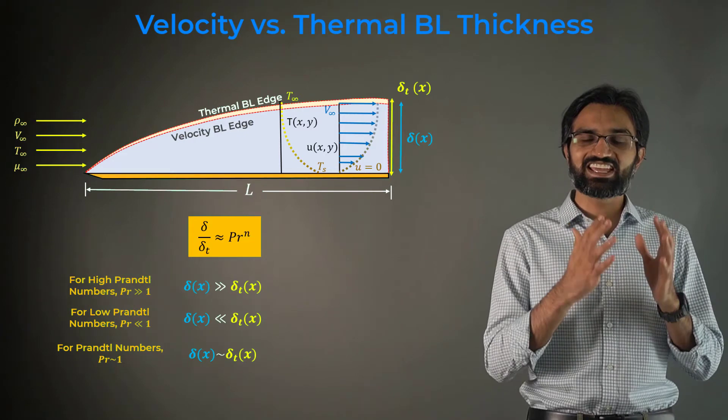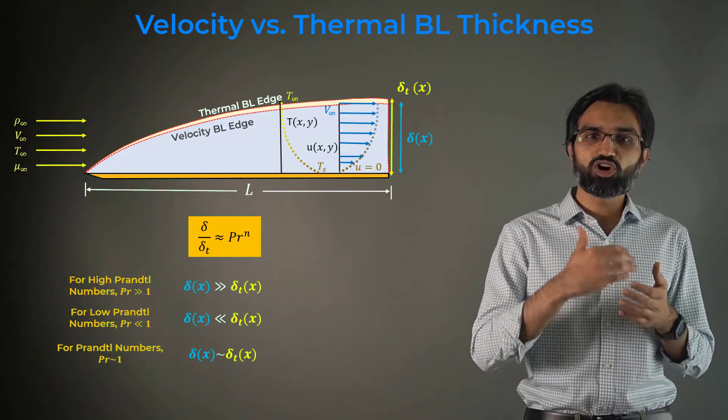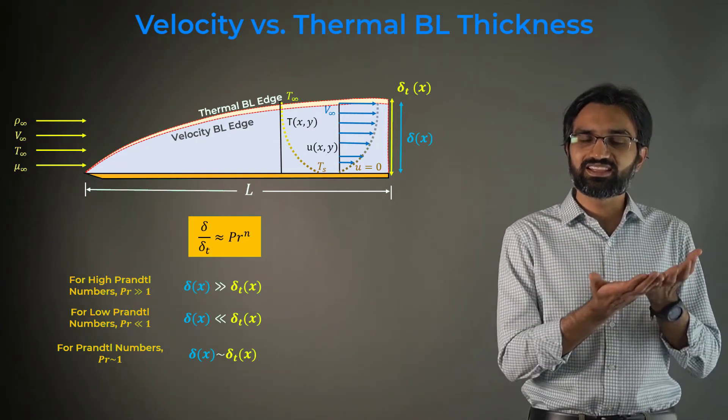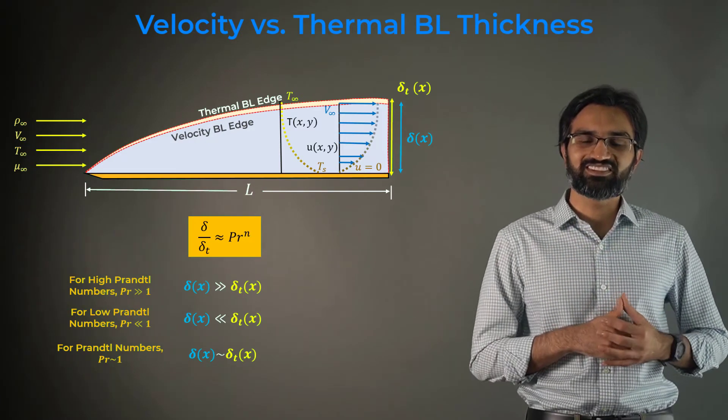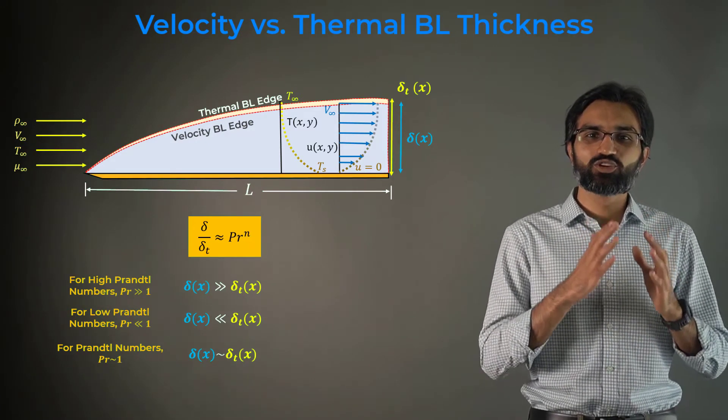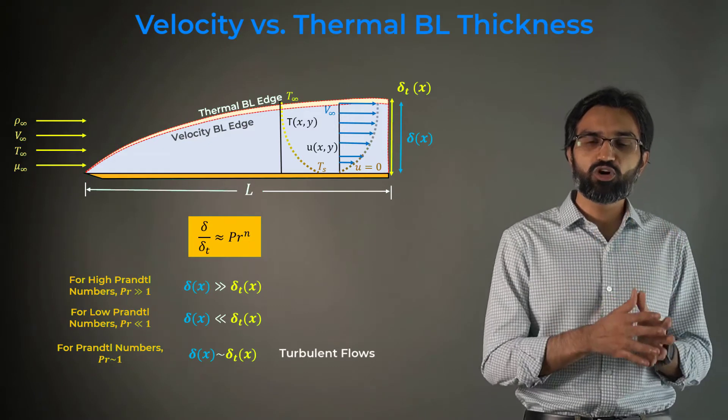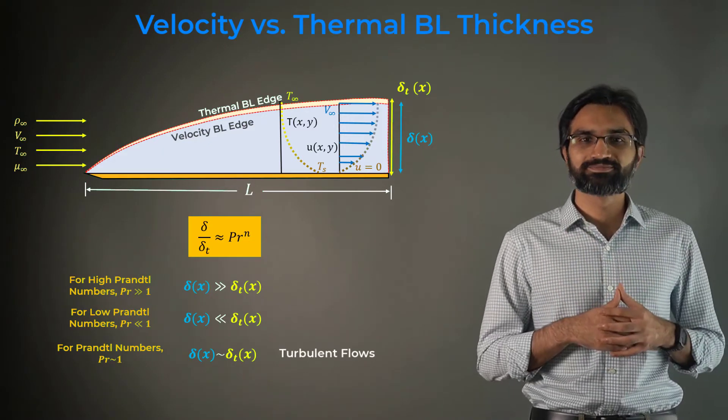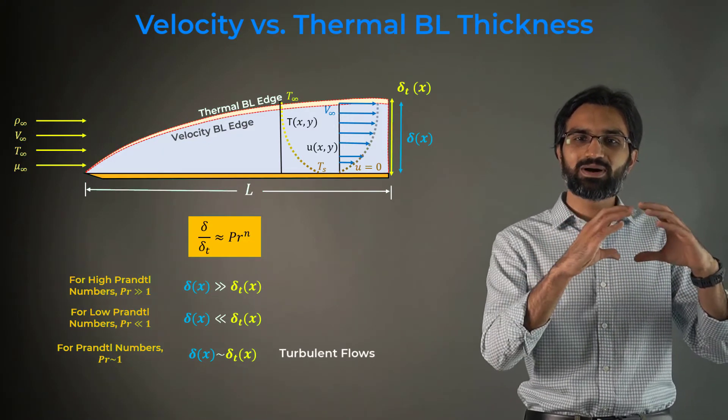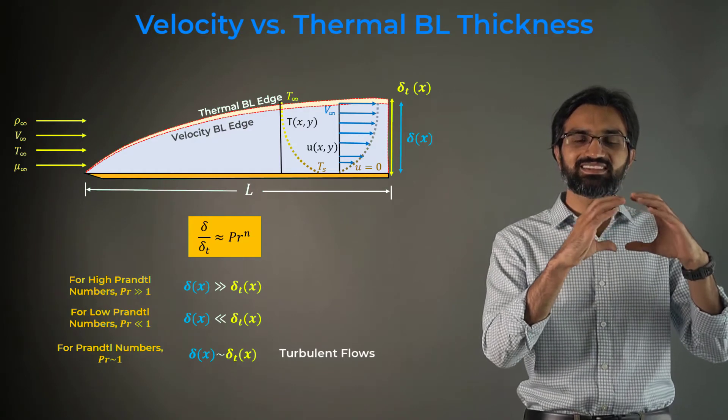These observations are extremely important in modern-day CFD when deciding the near-wall resolution of the computational meshes. It is crucial to highlight that for most practical turbulent flows, the velocity and thermal boundary layers have nearly same thicknesses.